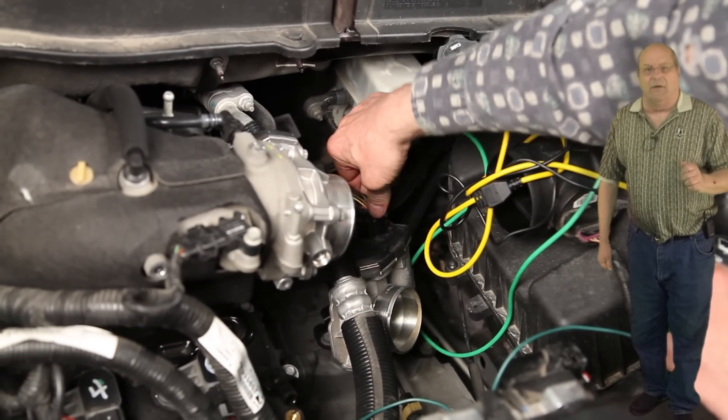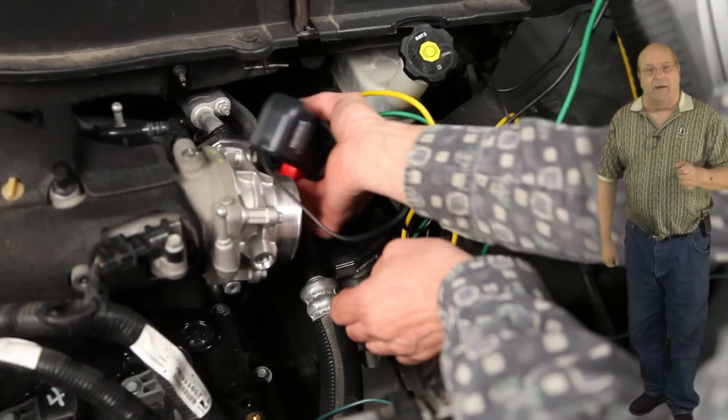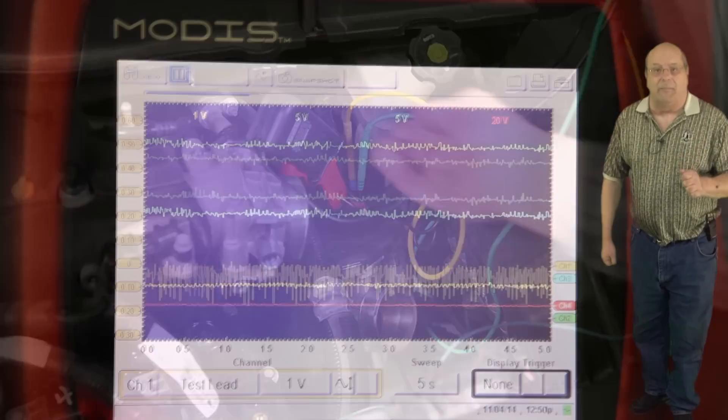We are now going to use the connector on the known good throttle body and connect it to another throttle body and test it in the same manner. Now look at the amperage pattern.